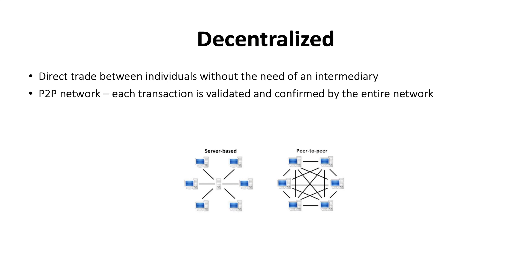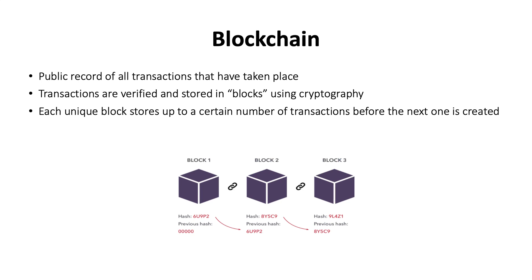Moving on to blockchain: blockchain technology, simply put, is a public record of all transactions that have taken place on the network. All transactions are verified and stored in data blocks using cryptography. Each block can store up to a certain number of transactions before a new block is created, with every block containing a compressed version of the previous one and receiving a new block ID called the hash. If any information in any block must be changed, all the blocks must be changed — which is why it was originally called the chain of blocks, later adopted simply as blockchain.